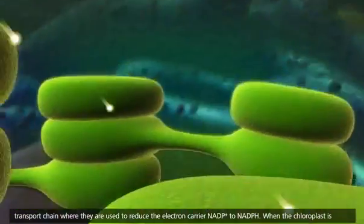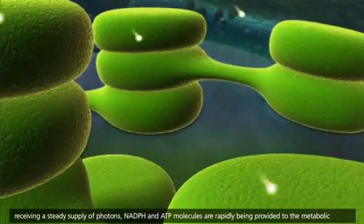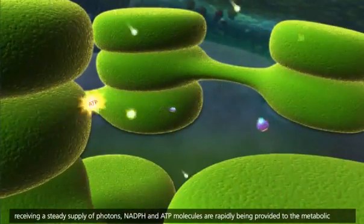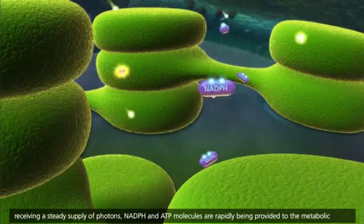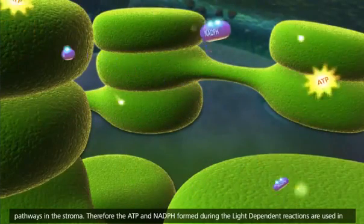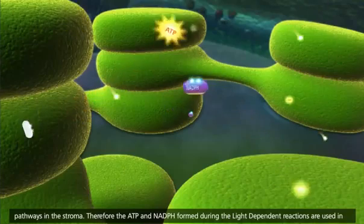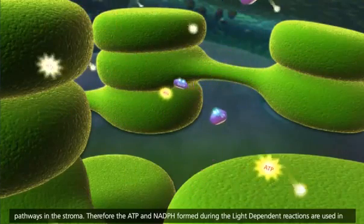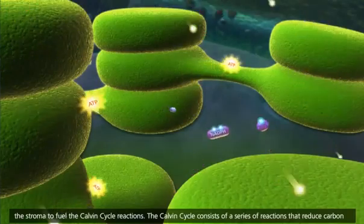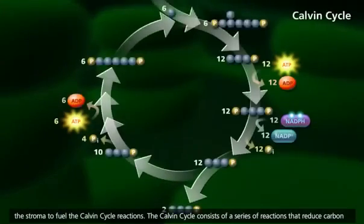When the chloroplast is receiving a steady supply of photons, NADPH and ATP molecules are rapidly being provided to the metabolic pathways in the stroma. Therefore, the ATP and NADPH formed during the light-dependent reactions are used in the stroma to fuel the Calvin Cycle reactions.